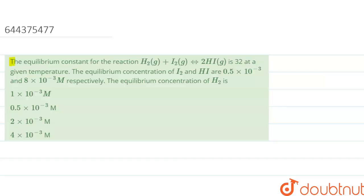Hello, in this question we are given the equilibrium constant for the reaction H2 gas plus I2 gas gives 2 HI gas is 32. At a given temperature, the equilibrium concentration of I2 and HI are 0.5×10⁻³ and 8×10⁻³ molarity respectively. The equilibrium concentration of H2 is to be found.